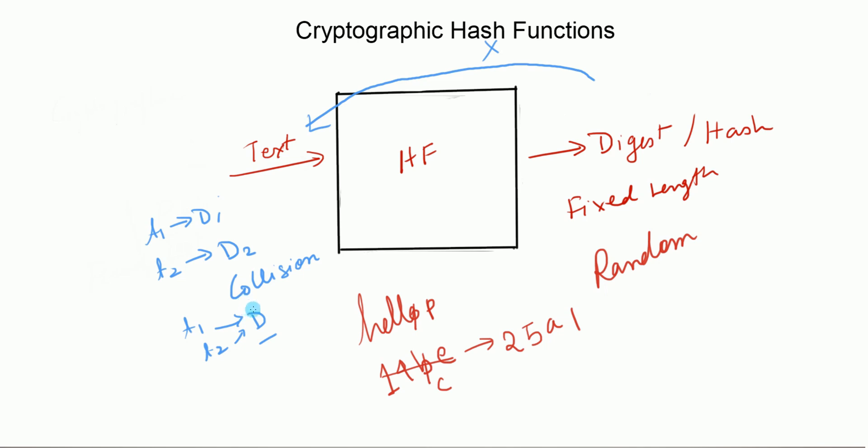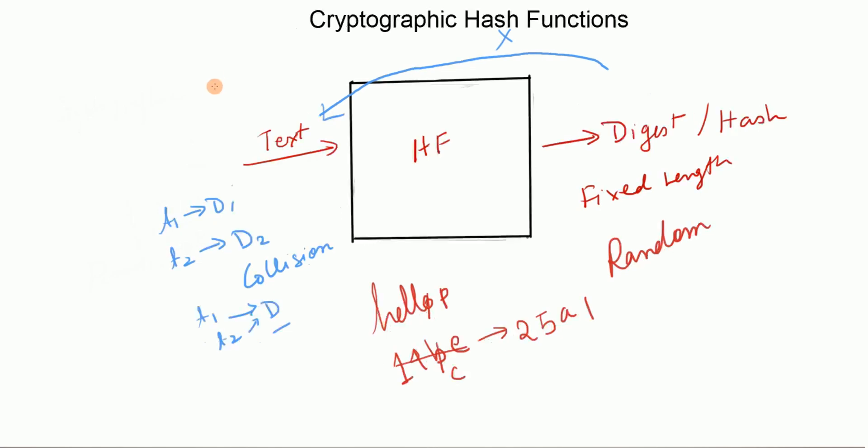But finding a duplicate is practically impossible. Last but not the least, the hash functions should not be computationally expensive. They should be computationally efficient because we need them in practical applications. Some popular examples of hash functions may be SHA-256.